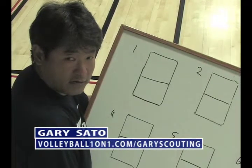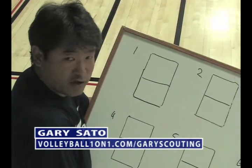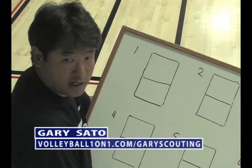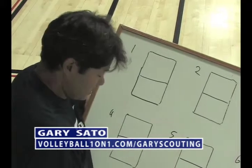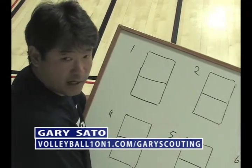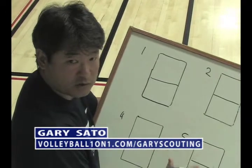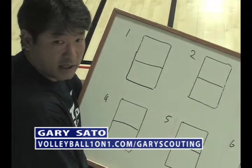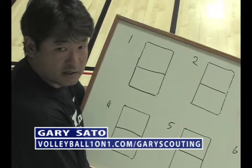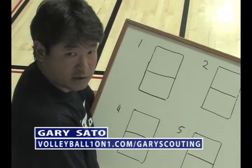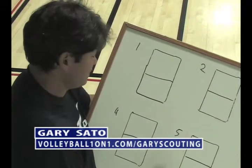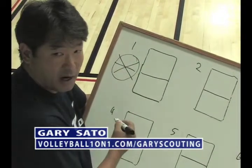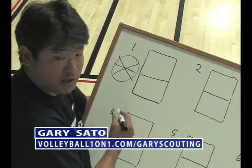This video is about scouting your opponent, and we'll talk about the charts that I use. Normally I would have a piece of paper with six courts on it, and I try to identify the other team's rotations and formations and who they set the most. So as the game begins, I have the pie where I'll put in the players' numbers.